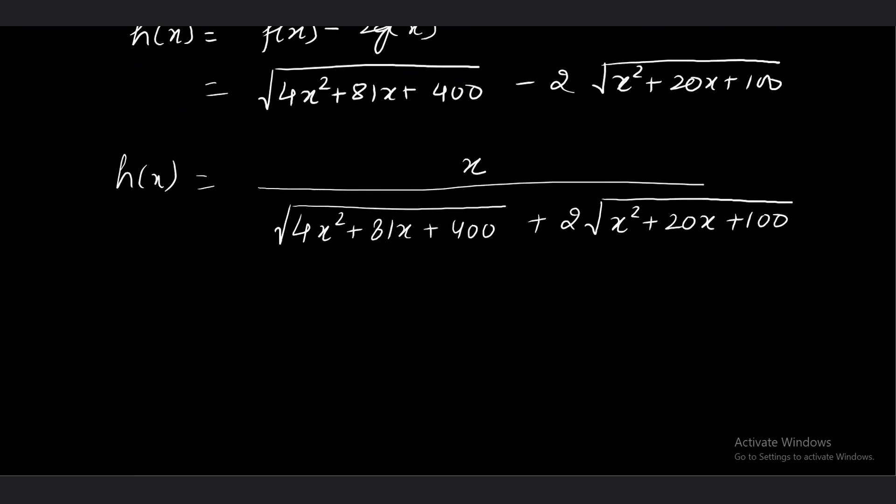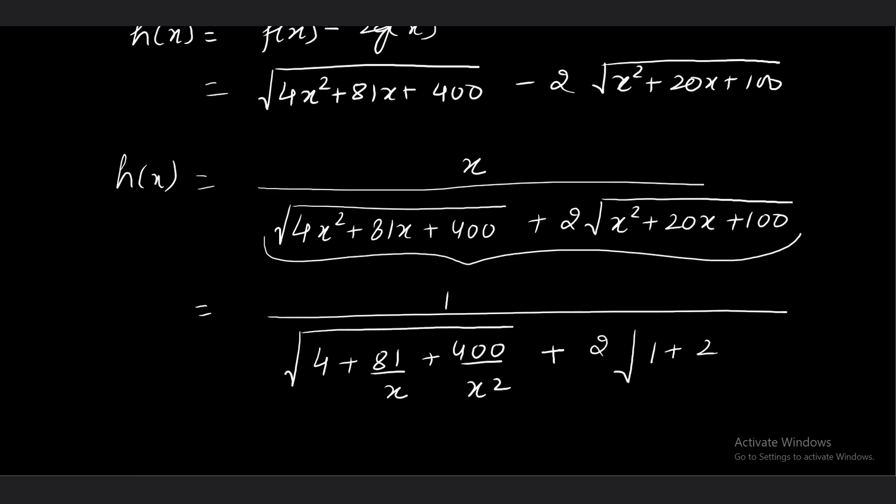Can we say that h(x) is going to be an increasing function? How can you identify? You can easily identify by differentiating this expression, or you can identify it this way. Let me tell you an easier way. You can take this whole expression, just look at the denominator. Taking x to the numerator, we can write it as 1 divided by root over 4 plus 81/x plus 400/x square, plus root over 1 plus 20/x plus 100/x square.